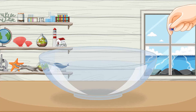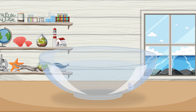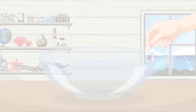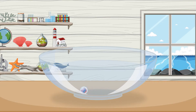Now, consider a more complex scenario. Imagine dropping a marble into a glass bowl. Initially, the marble rolls back and forth, driven by gravity. Over time, it starts to slow down and eventually stops. This happens due to the force of friction.